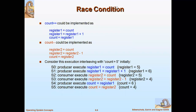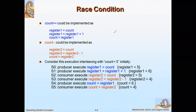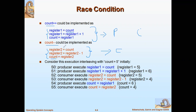There is a concept called race condition. Before discussing it, let's take the producer-consumer problem as an example. The producer produces and the consumer has to consume. Count++ means the producer is producing and count-- means the consumer is consuming. This can be considered a critical section because the variable count is used by both processes.